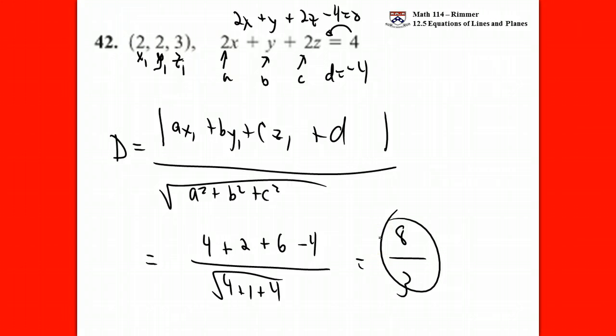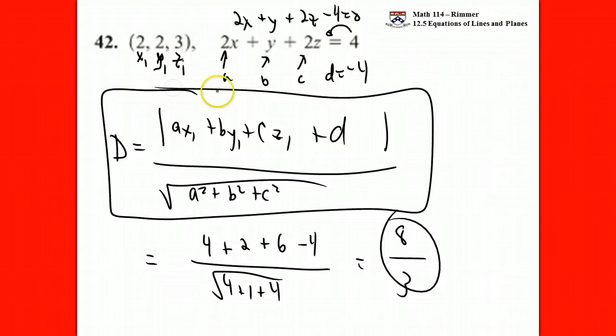Given the formula, this is a calculation where you have to be careful not to make any small mistakes. It's good if you were able to follow the derivation, but I wouldn't ask you to derive it — it's just to help you out. That's the distance from a point to a plane. We also need the distance from a point to a line.